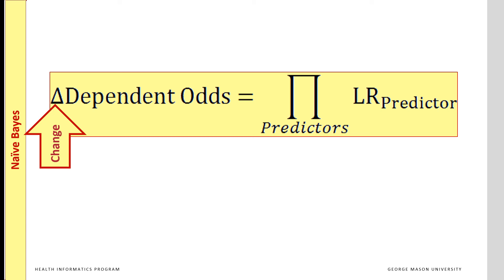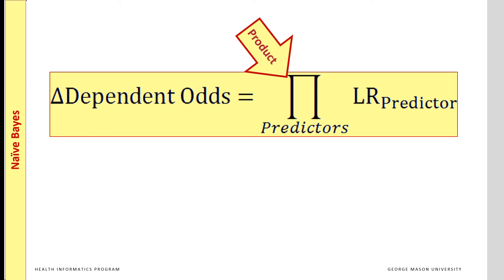Naive Bayes is a probabilistic model that uses Bayes' formula even when the assumption of independence is not verified. It focuses on the part of the Bayes' formula where the data changes from patient to patient. Since prior odds is constant, we focus on the product of the likelihood ratios, which shows how much the posterior odds — or the dependent variable — will change as a consequence of the observed predictors. The capital PI symbol shows that a product is calculated across all likelihood ratios of the predictors.